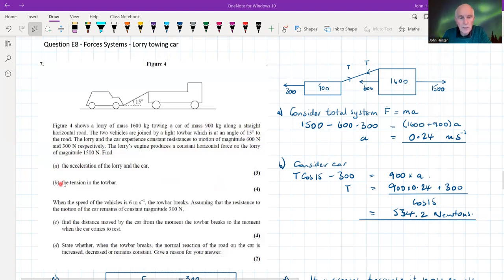The second part: find the tension in the tow bar. We just consider the car now. There is no acceleration in the vertical direction, it's all in the horizontal direction. In the horizontal direction, this force from the tow bar is T cos 15, because we're resolving that through an angle of 15.